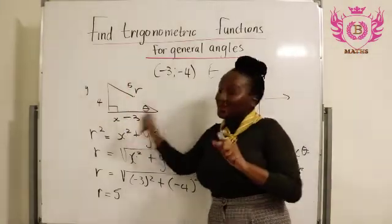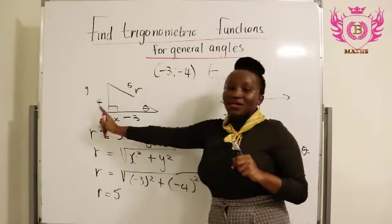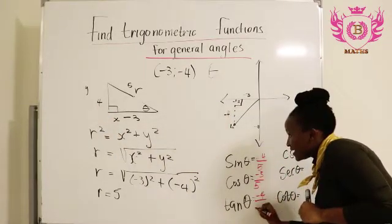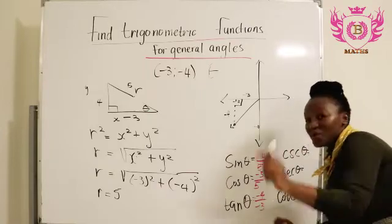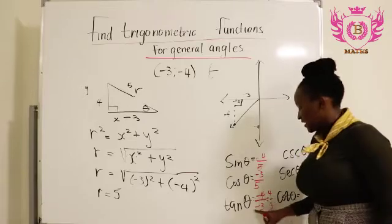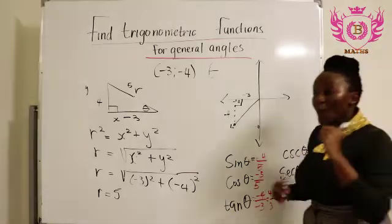So our adjacent is -3 and our opposite is -4. So it will be -4 divided by -3. And we can simplify this to be 4/3 because a negative divided by negative gives you a positive.